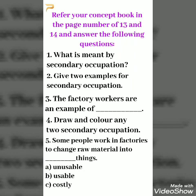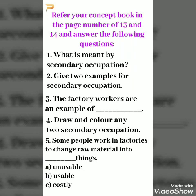Your third question is: The factory workers are an example of dash. Your fourth question is: Draw and color any two secondary occupations. Your fifth question is: Some people work in factories to change raw material into dash things. Your options are A. Unusable, B. Usable, C. Costly.